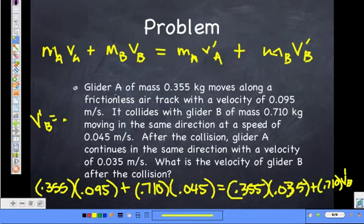0.075 makes more sense. So it's probably going to be a speed in between 0.095 and 0.045. 0.075 meters per second. Good. Yep, that is the velocity of glider B after the collision.